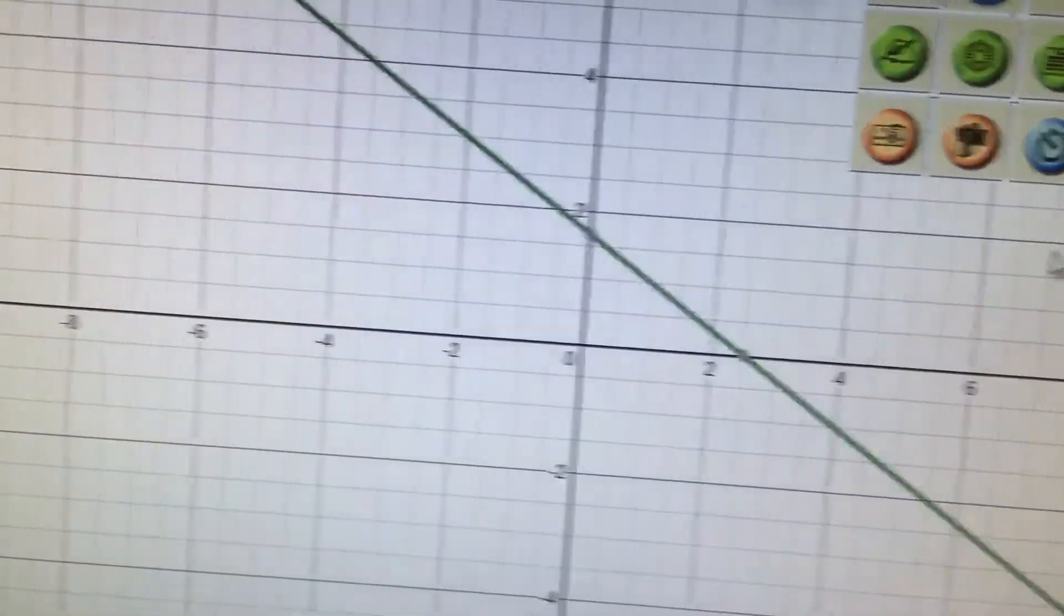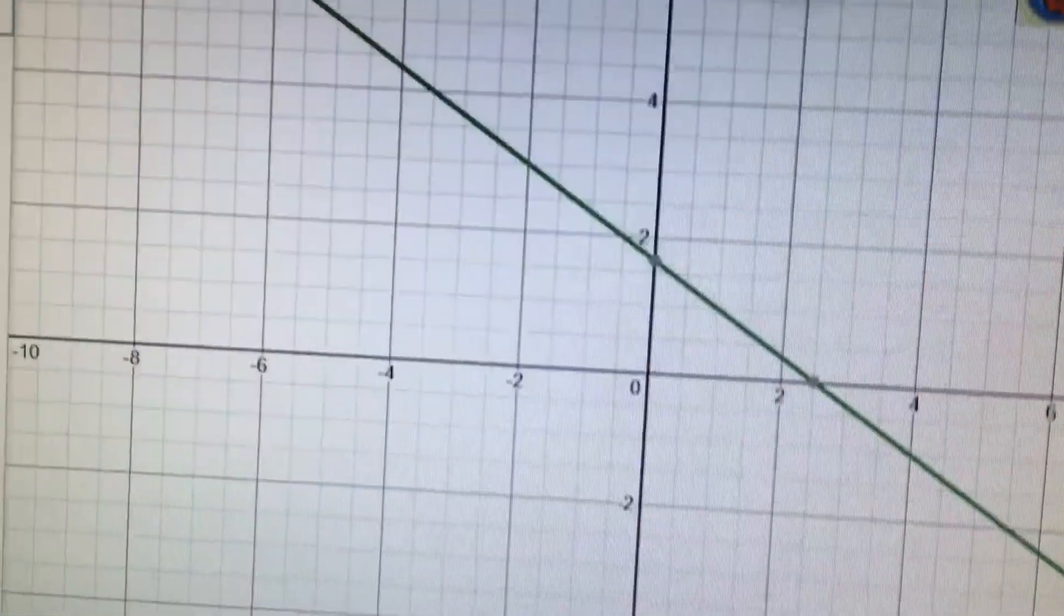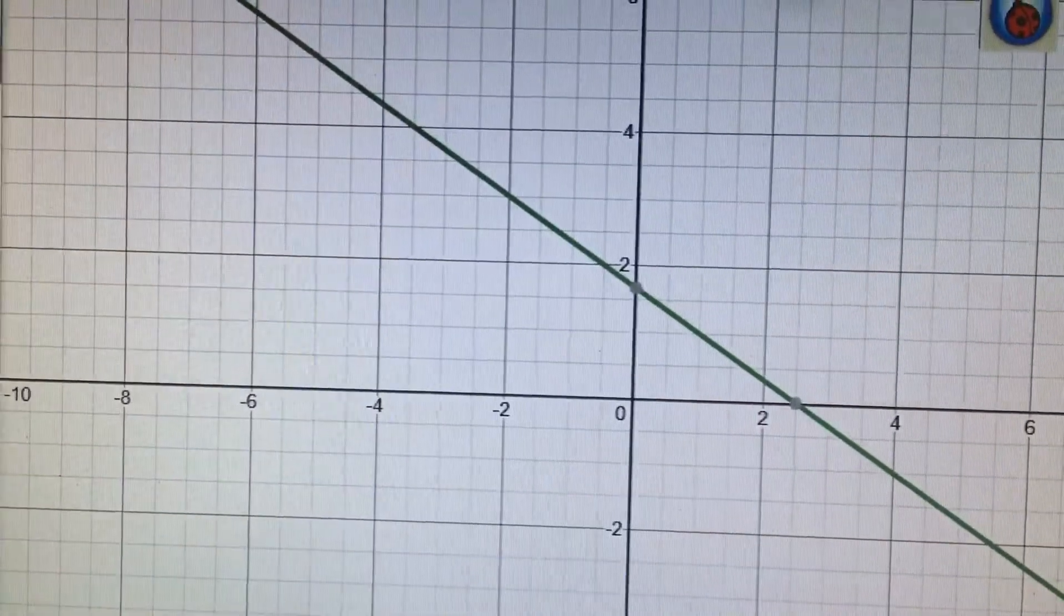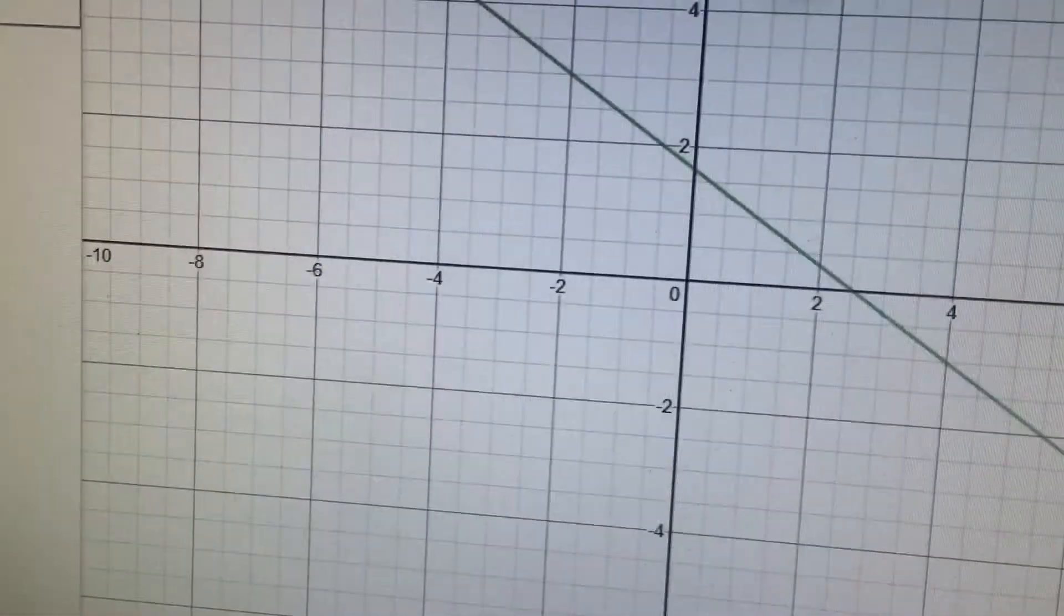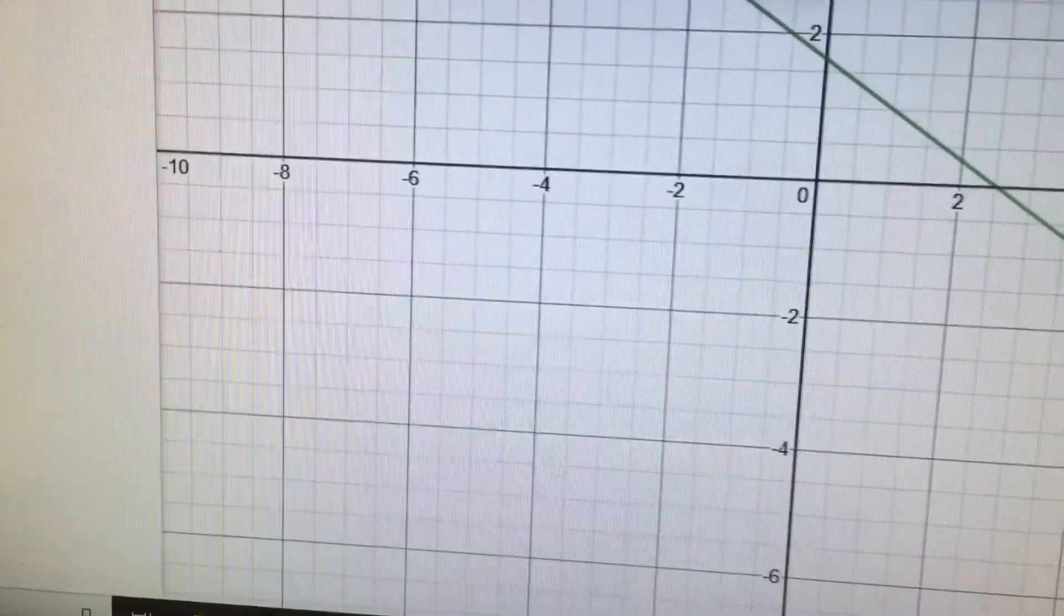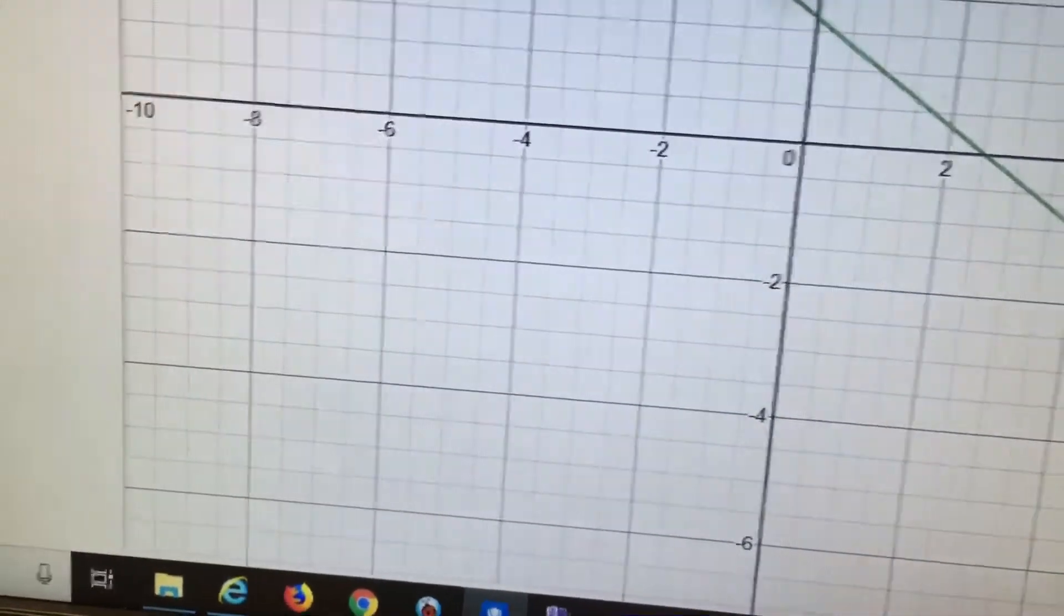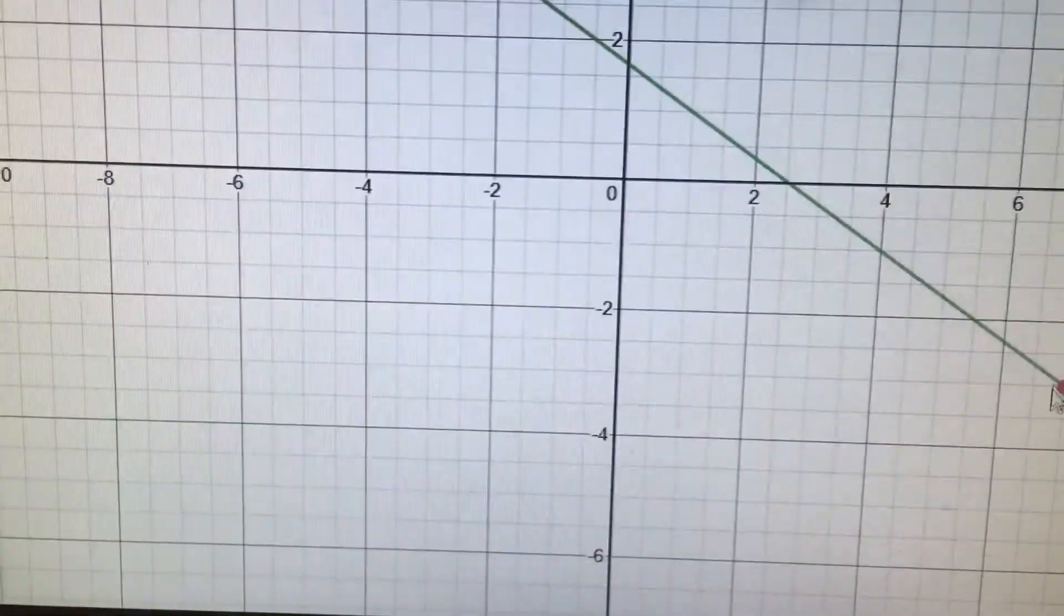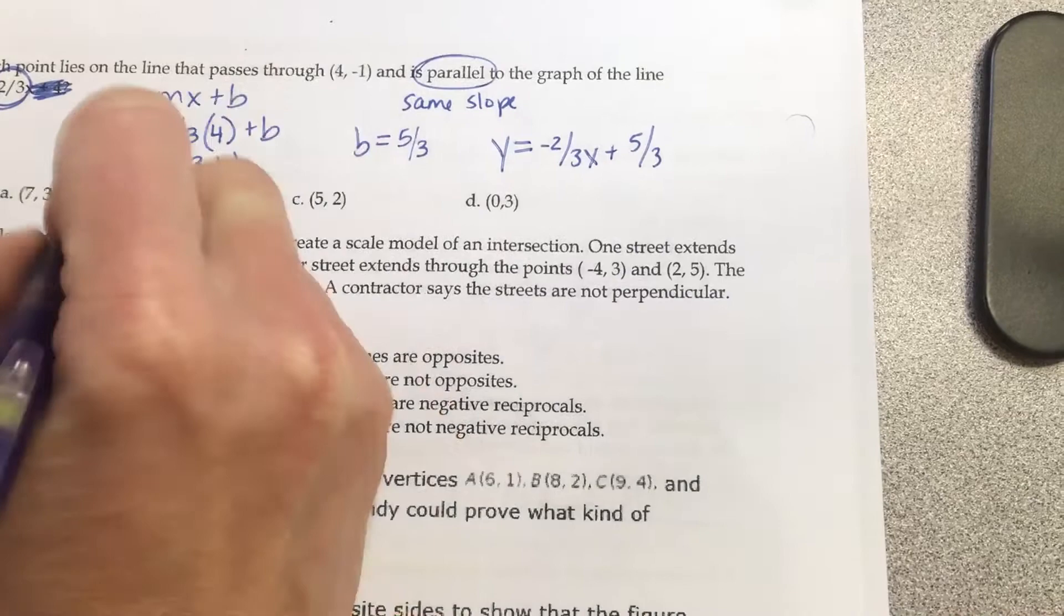What does A say? 7, 3. Is 7, 3 on this line? No. What's the next one? 7, negative 3. Let's use Philip's strategy from earlier - let's type them in. 7, 3. What's the next one? What did we just say? 7, negative 3. Well, we can stop there. Do you see how the red dot's on the line? So the answer is B.